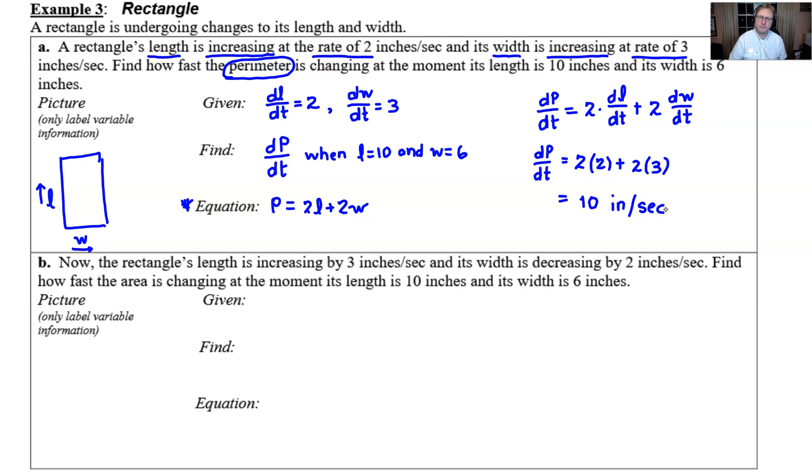Notice the rate of change of the perimeter is not dependent upon the length and the width whatsoever. They could have been anything at any moment. That rate of change of the perimeter is always going to be 10. Now let's take a look at part B, which isn't going to really change a whole lot.